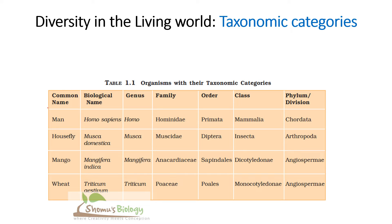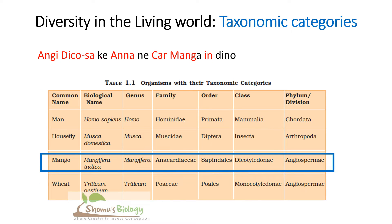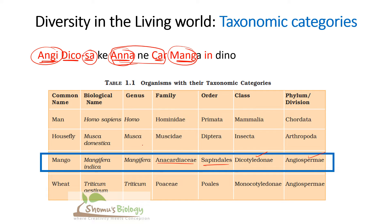Now let's move to mango — it's a plant. For mango, the sentence is: 'Angi dikosa ke anna ne kaar maanga isdi no.' 'Angi' stands for Angiosperm; 'dikosa' for Dicotyledon; 'sa' for Sapindales; 'anna' for Anacardiaceae; 'car' also helps remember Anacardiaceae; 'mang' for Mangifera; and 'indica' for the species. So the scientific name is Mangifera indica.